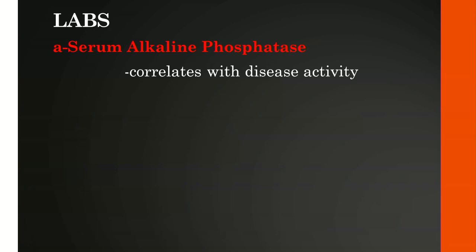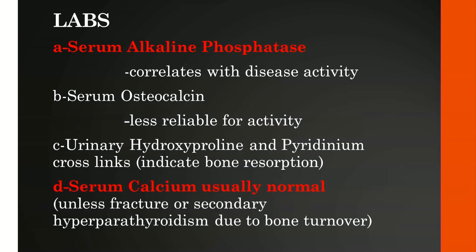Paget's disease is fairly common, and you will encounter it as a radiologist and probably be the first to suggest the diagnosis. If you see it on the radiograph, you can suggest serum alkaline phosphatase as a lab study that correlates with disease activity. Other studies—urinary measures and serum osteocalcin—are used less frequently and are less reliable. Of note, serum calcium is usually normal unless there's been a fracture or secondary hyperparathyroidism develops due to increased bone turnover.